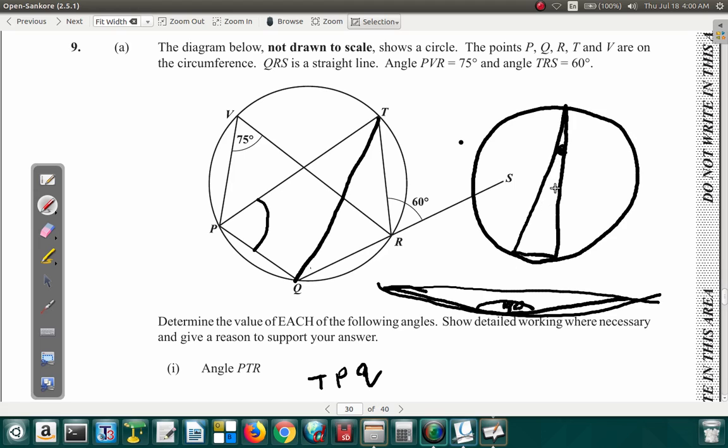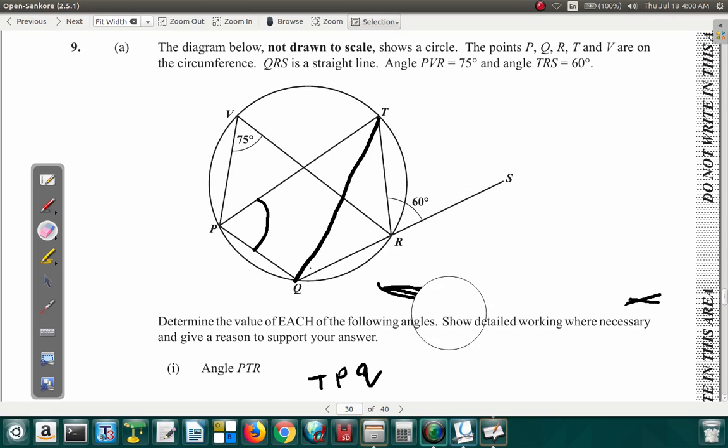This is approaching 180 and this is approaching 0. 180 plus 0 is 180. So that might help you remember that when you have angles in alternate segments on the same cord, they add up to 180 degrees.